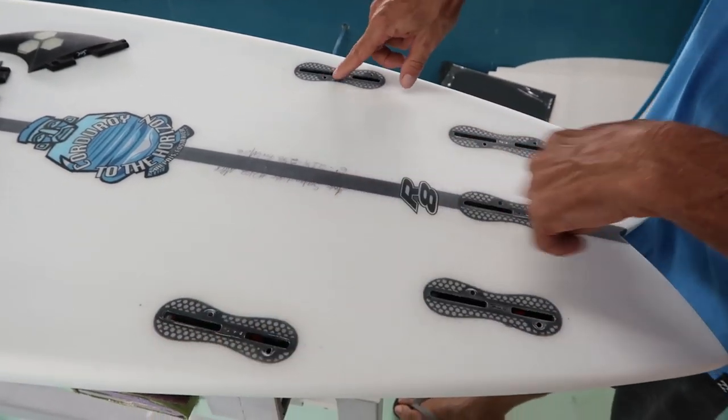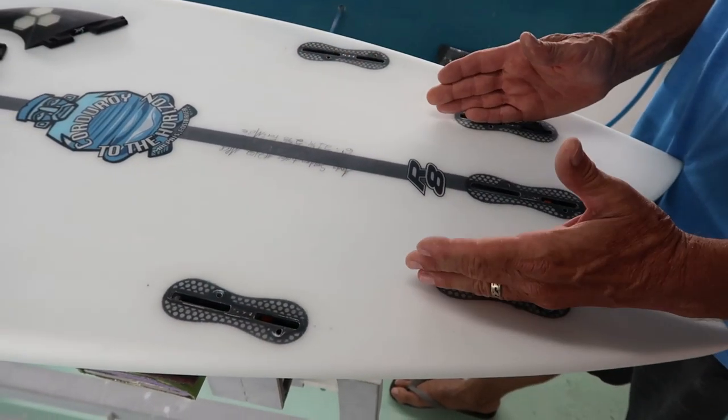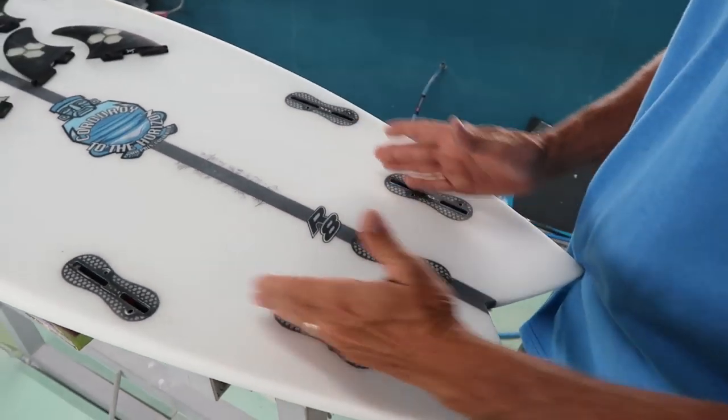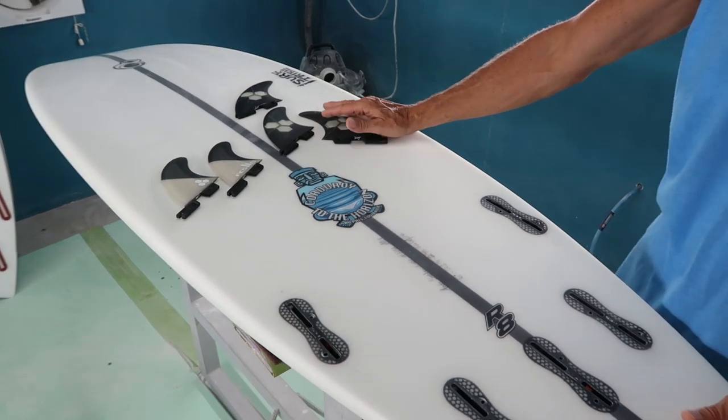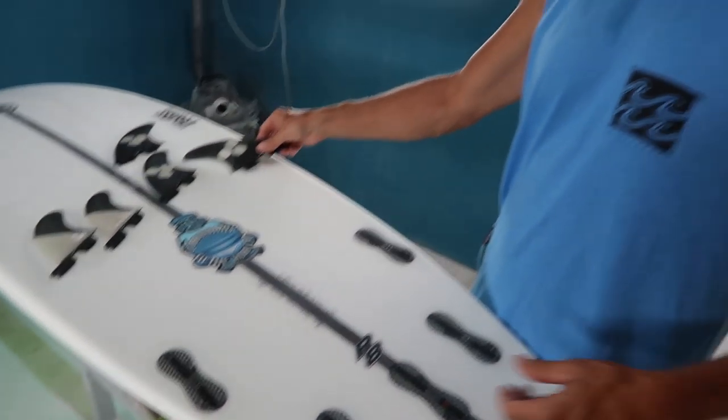It gives you the option to ride it as a thruster, so three fins and not have any fins in here, or you can take the back fin out and put it as a quad. So we have that option here since I got the Almeric five fin set.